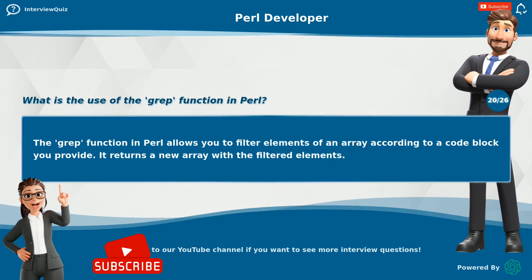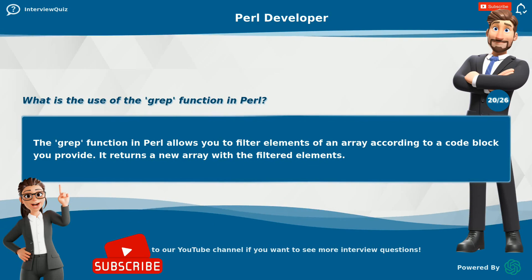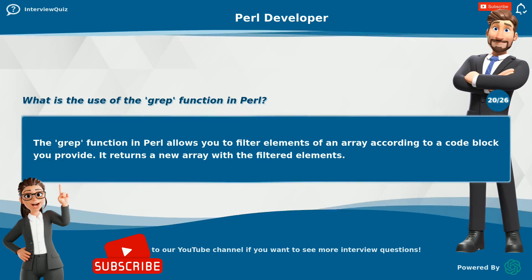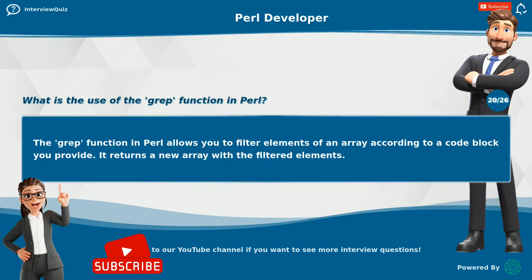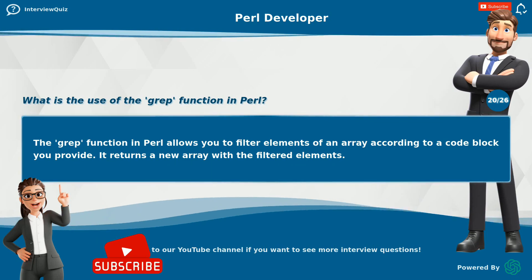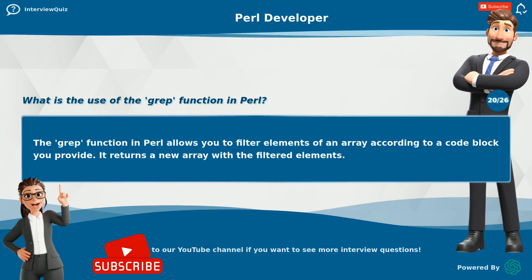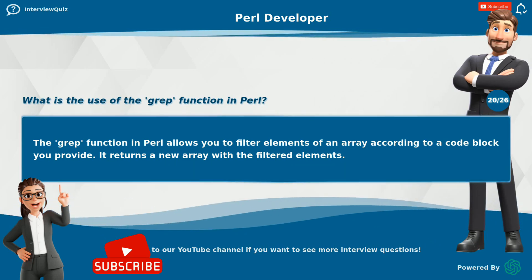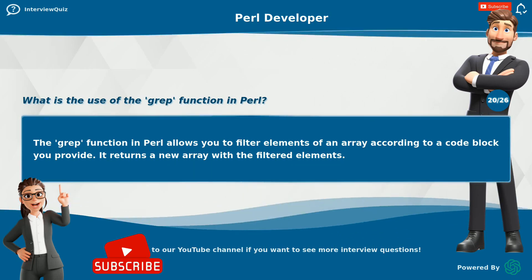What is the use of the grep function in Perl? The grep function in Perl allows you to filter elements of an array according to a code block you provide. It returns a new array with the filtered elements.